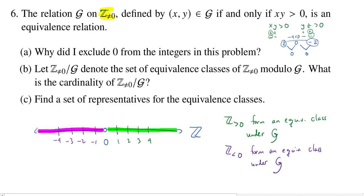Okay, but that's it. We've covered all of the non-zero integers. We can mark this down here that it's non-zero. We've covered all of them. So there's only two equivalence classes.